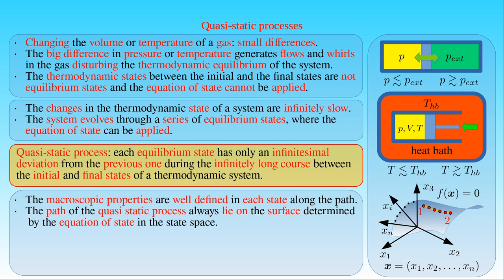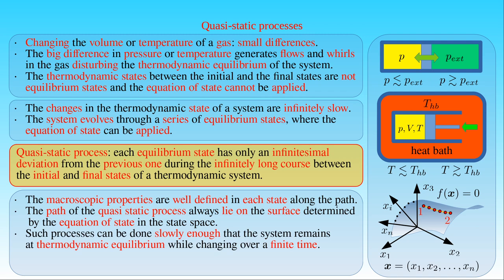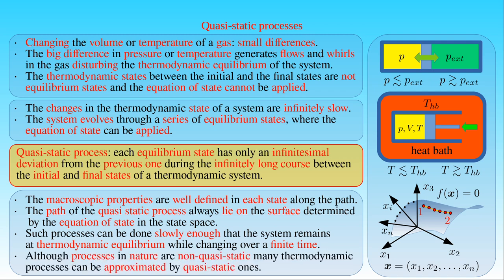Quasi-static processes are idealized processes occurring infinitely slowly such that equilibrium holds at all times, but in practice such processes can be done slowly enough that the system remains at thermodynamic equilibrium at each instant while it changes over a finite time. Since quasi-static processes cannot be completely realized for any finite change of the system, all processes in nature are non-quasi-static. However, we can study many different thermodynamic processes by approximating them as a quasi-static one, and draw important conclusions on their nature.